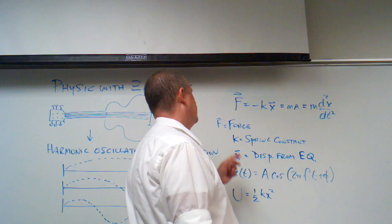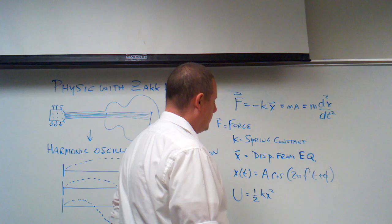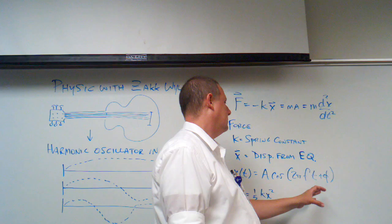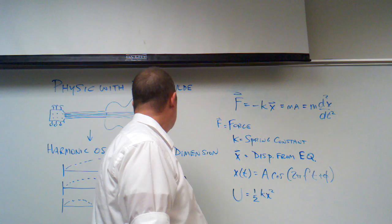Where F is the force, k is the spring constant, and x is the displacement. The general solution for the displacement as a function of time is equal to the amplitude of the string at any time. The cosine of 2f is the frequency times the time plus the phase. And U is one half kx squared as the potential energy of the whole system.